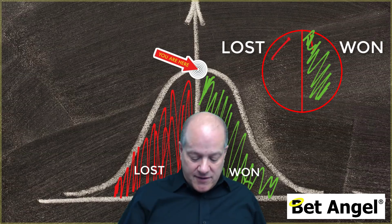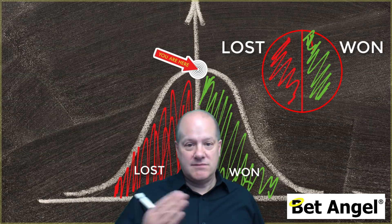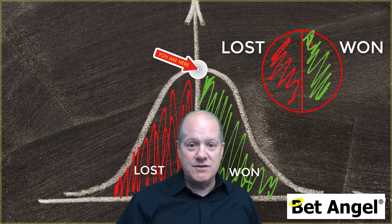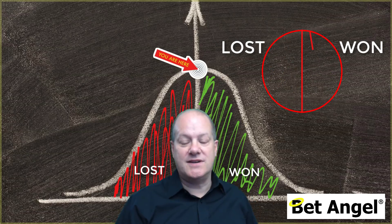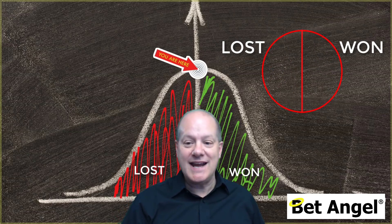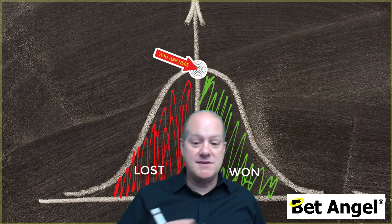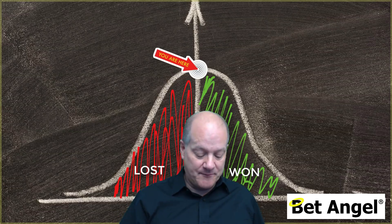Whether you look at it like a bell curve or a pie chart, you can see that there's money in the market. Your mission, should you choose to accept it, is to get some of that money out of the market. You have to be on the right-hand side of this.